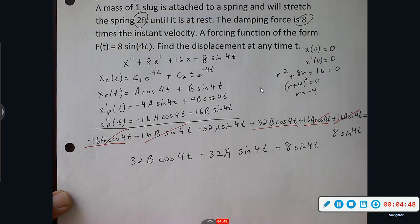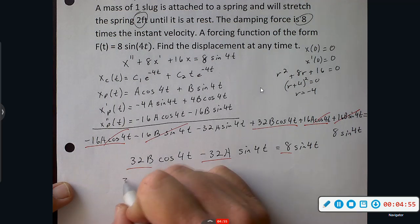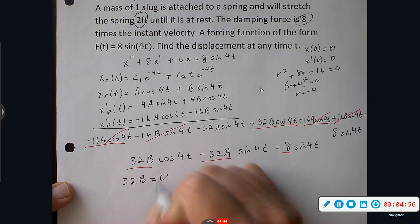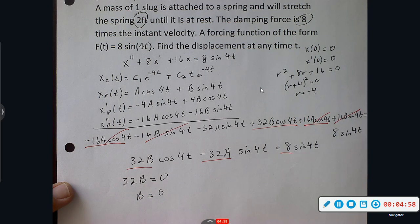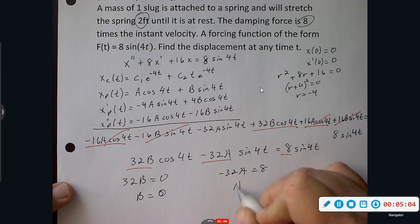We match them up, match them up. 32A with 8, 32B with nothing. So B is quickly zero, and A is going to be negative one fourth.